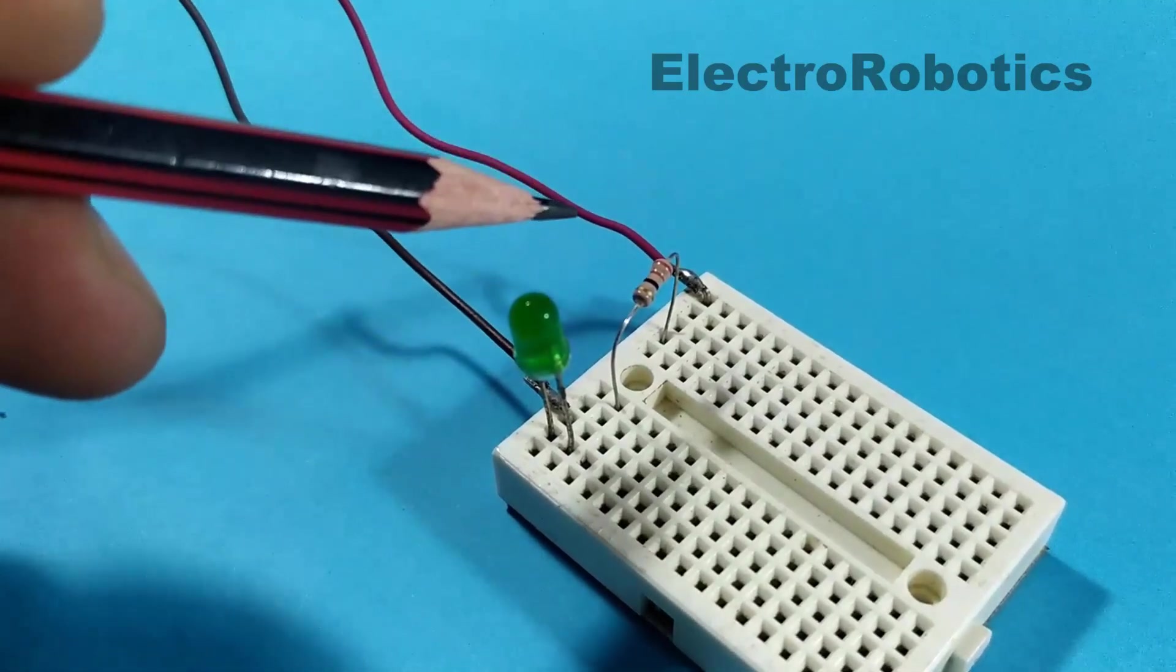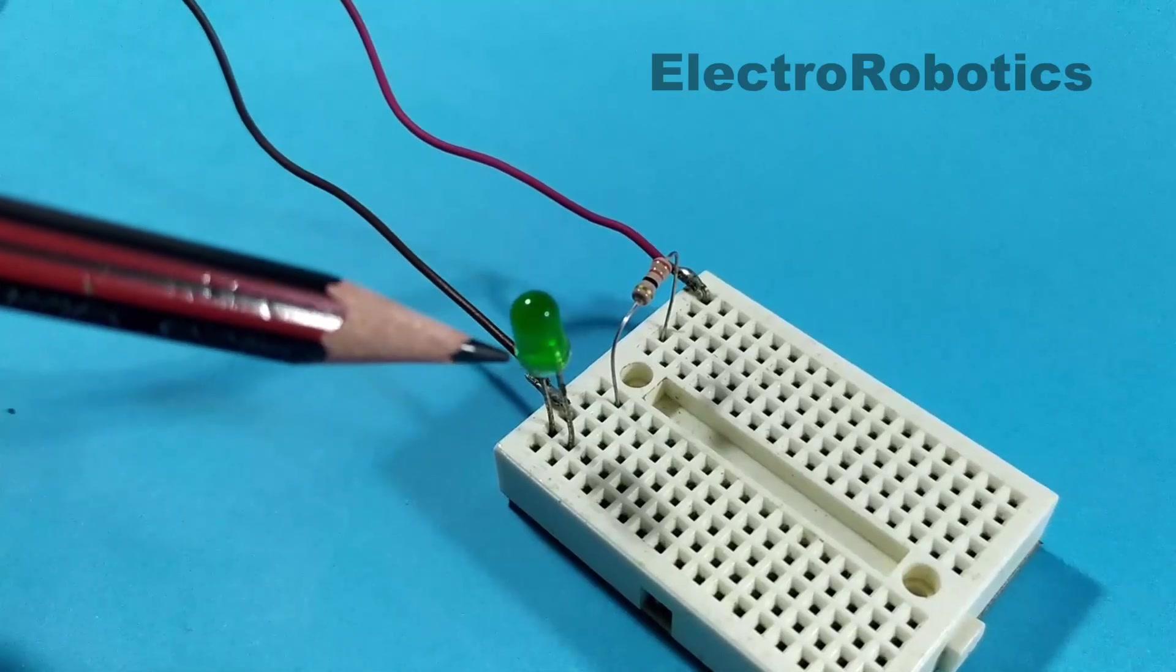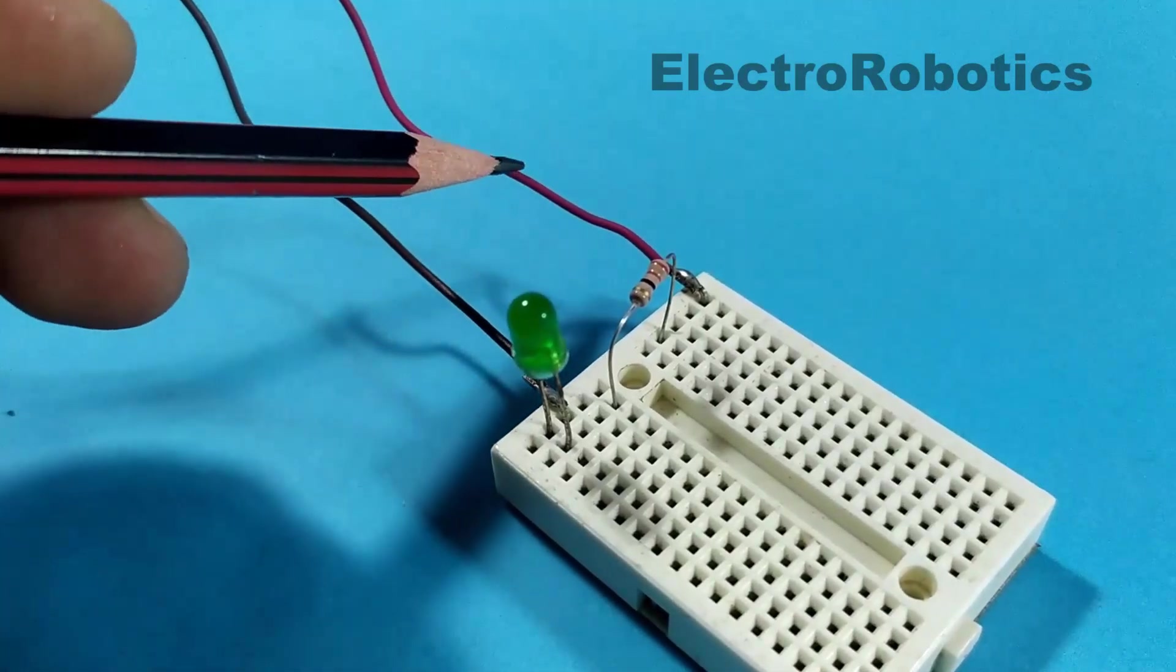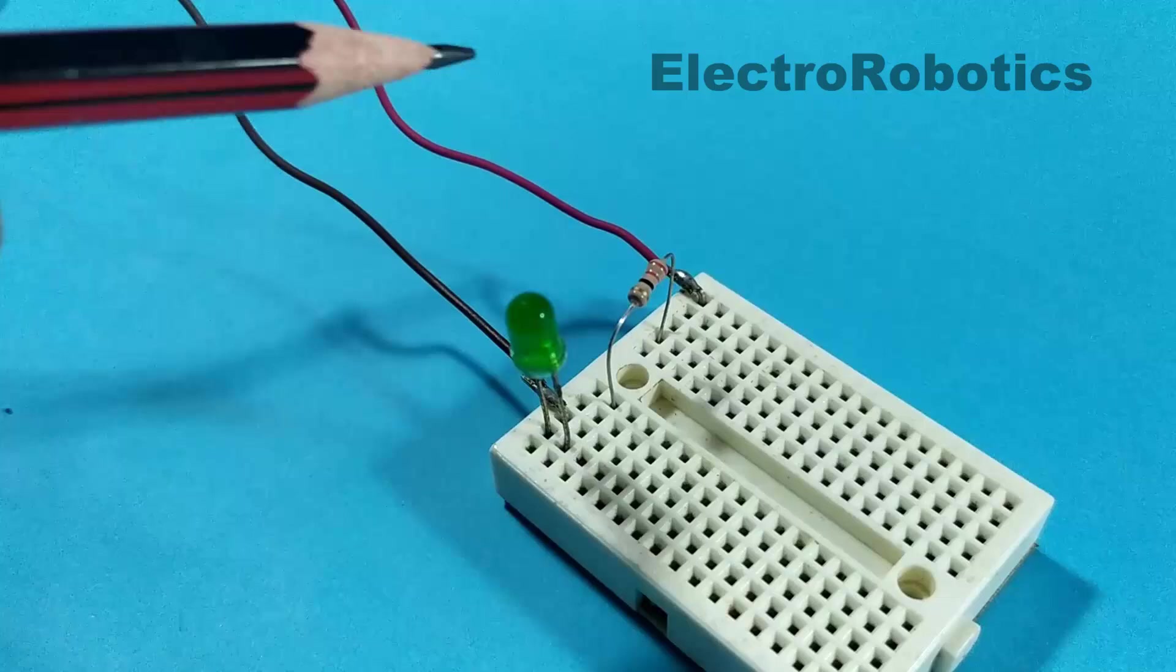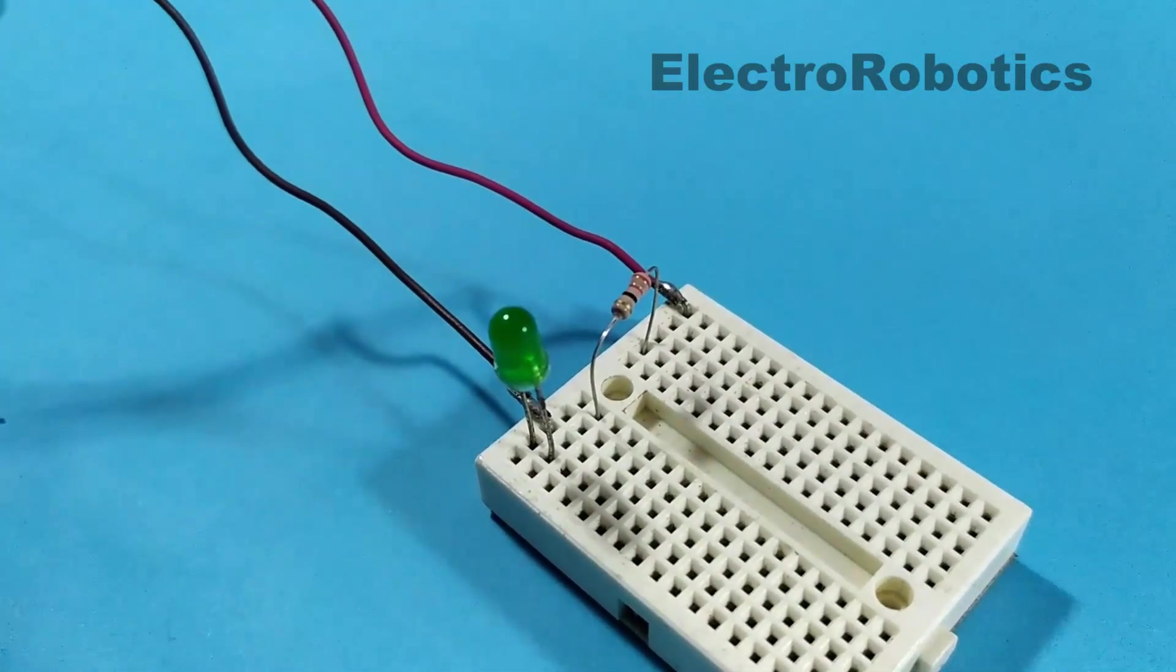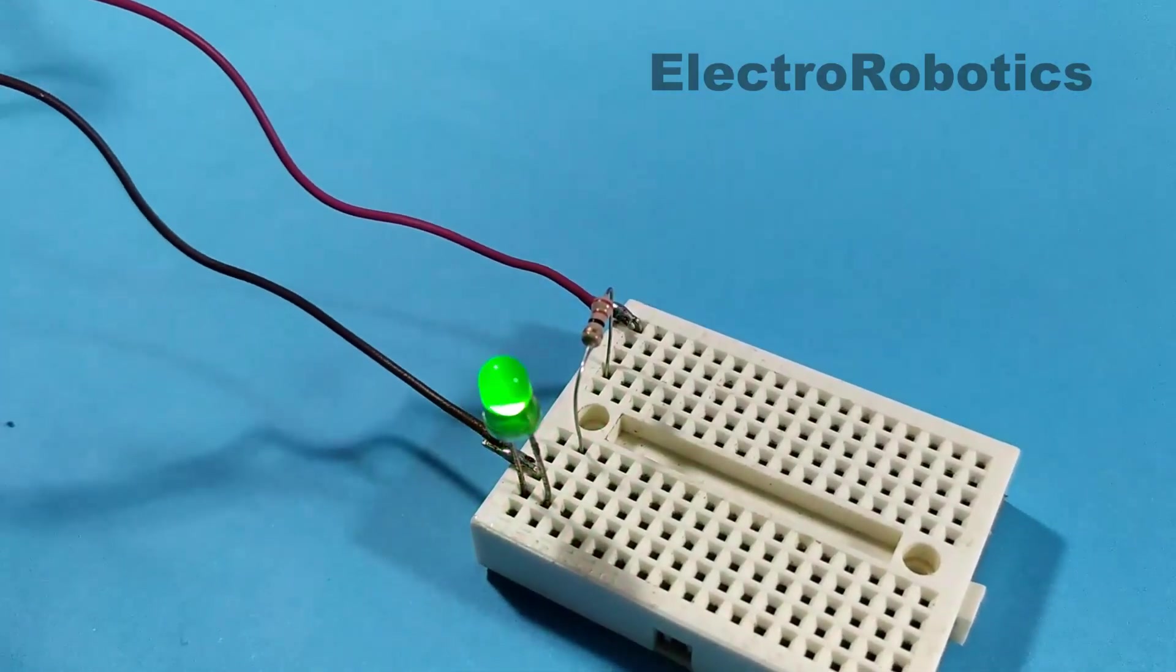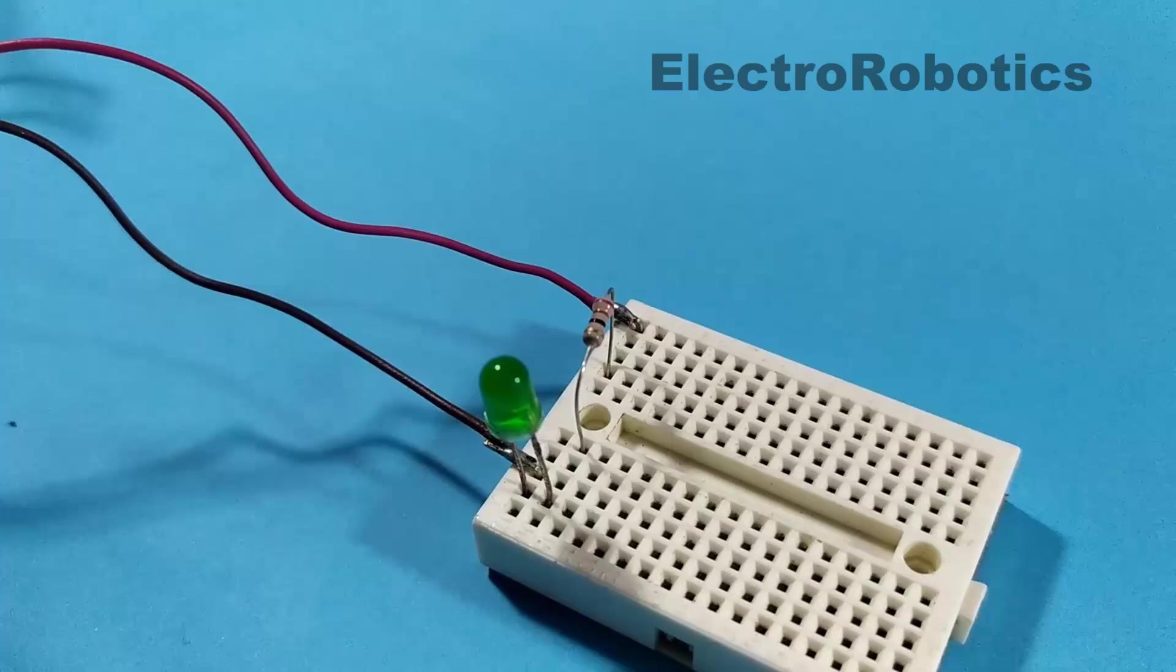Hello boys and girls, this is Professor Nelson from ElectroRobotics. Today we are going to see what happens to an LED and its resistance if they have not been calculated properly for the supply voltage that is being connected. Let's see this example.